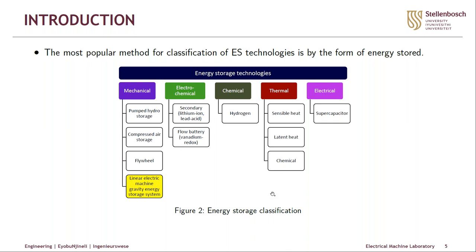The most popular method for classification of energy storage technologies is by the form of energy stored. There are five classifications: mechanical, electrical, chemical, electrochemical, and thermal. For this presentation we are concentrating on the linear electric machine gravity energy storage system, which falls under the mechanical category. I will show where it falls under the mechanical category on the next slides.